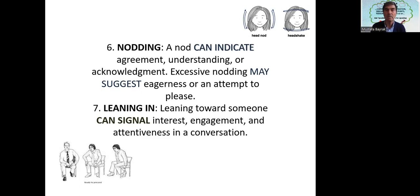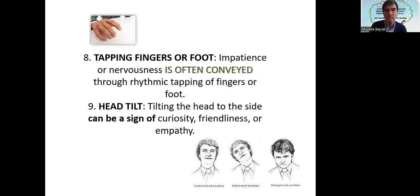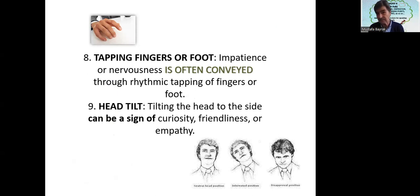Nodding — in Turkish it means yes. A nod can indicate agreement, understanding, or acknowledgement. Excessive nodding may suggest eagerness or an attempt to please. Leaning in — leaning towards someone can signal interest, engagement, and attentiveness in a conversation. Tapping fingers or foot conveys impatience or nervousness, often interpreted through rhythmic tapping. Head tilt — tilting the head to the side can be a sign of curiosity, friendliness, or empathy.